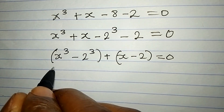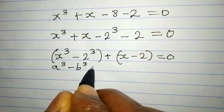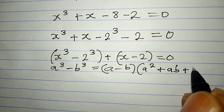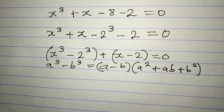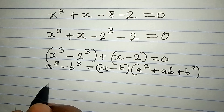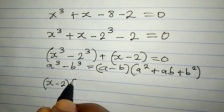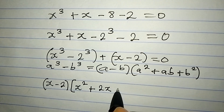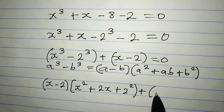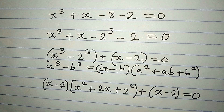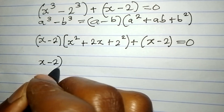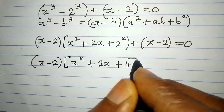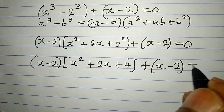From the first bracket, if you have a³ minus b³ and you factorize this, you get (a − b)(a² + ab + b²). I am going to apply this same formula here. So a minus b becomes x minus 2, then a² becomes x², ab becomes 2x, and b² is 2 squared. We have plus (x minus 2), and this is equal to 0.